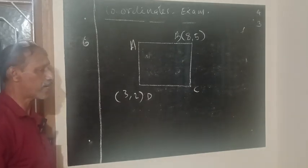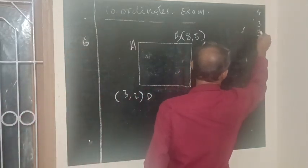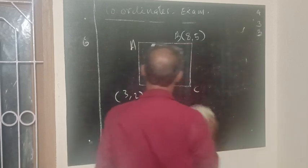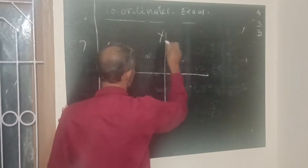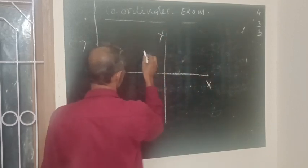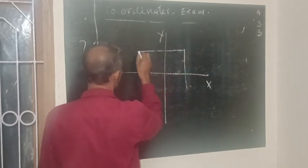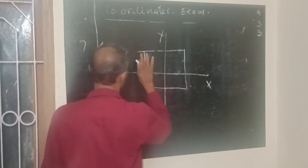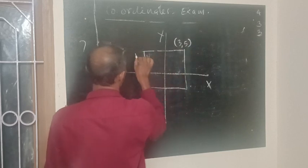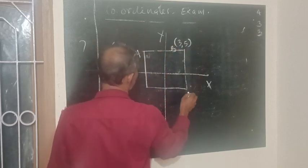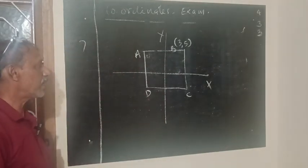Find the coordinates of the points A and C. If A, B, C, D is a square and the origin is the center of the square, find the coordinates of the points A, C, and D.